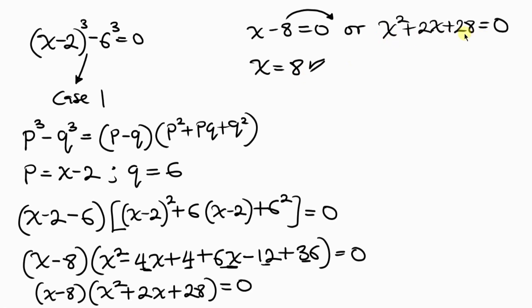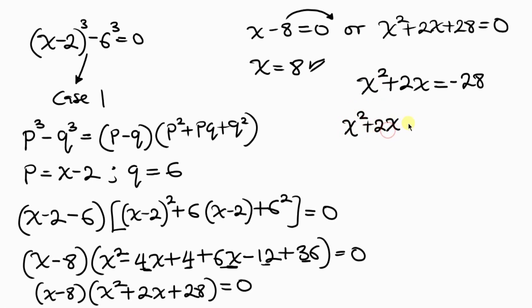This equation x squared plus 2x plus 28 cannot be factorized, so we use the completing the square method, chosen because the coefficient of x is an even number. First, move 28 to the right: x squared plus 2x equals negative 28. Then take the coefficient of x, which is 2, divide by 2, square the result, and add to both sides.